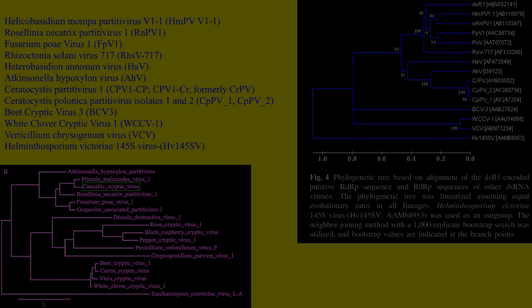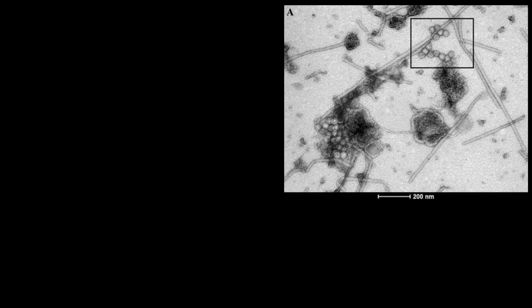It is considered possible that an ancestral virus may have been vectored by pathogenic fungi into primula hosts and became what is now known as Primula malacoides virus 1. A similar sort of process may have established an ancestral virus in cannabis that is now known as cannabis cryptic virus.